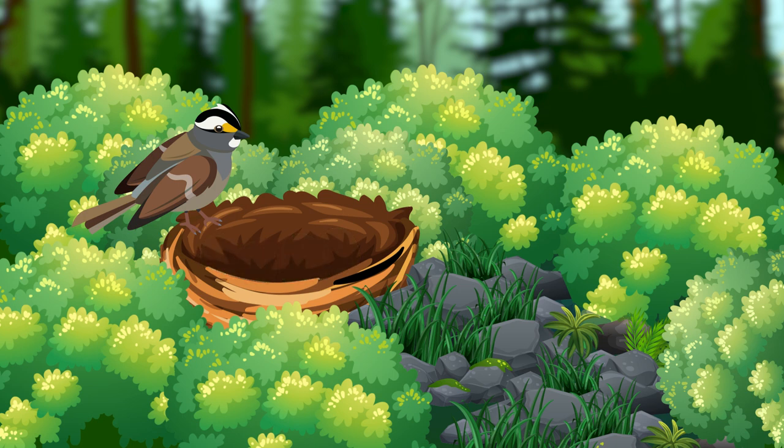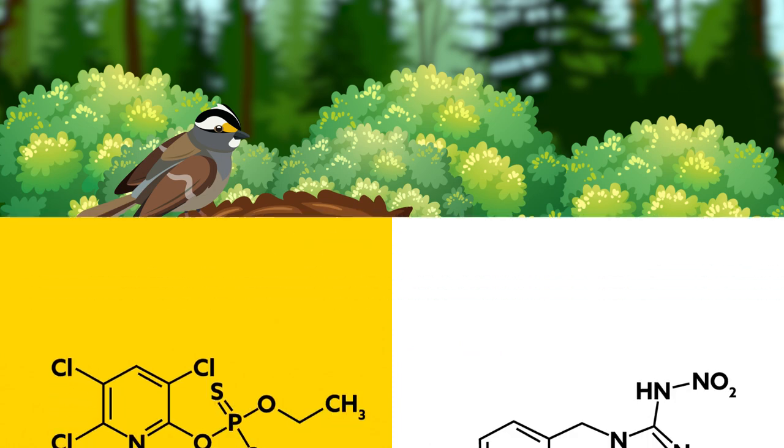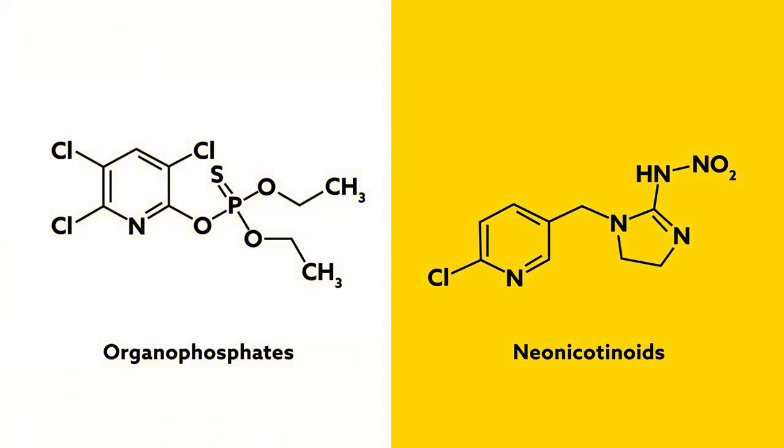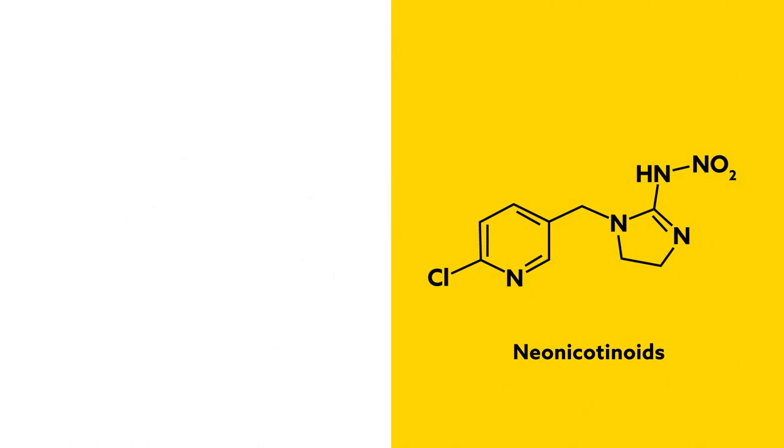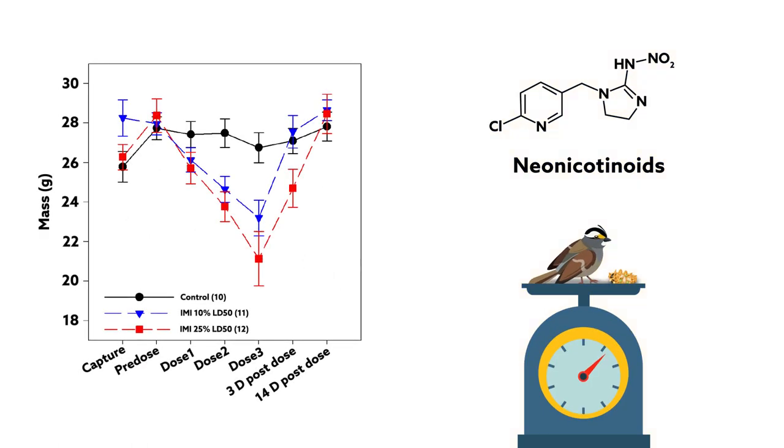The organophosphate did not appear to affect the sparrows in any other profound way. The neonicotinoid, however, had other, more visceral effects. Sparrows fed the pesticide lost significant body mass, up to a quarter of their original mass in only three days.